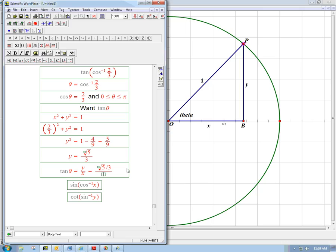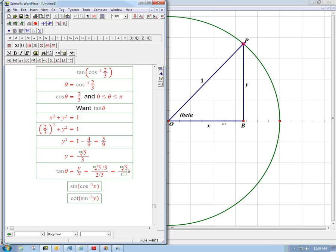And so this root 5 over 3 for y and 2 thirds for x, the 1 thirds cancel, and we get root 5 over 2.